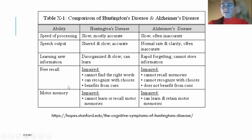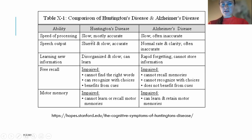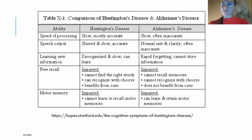It is important to compare Huntington's disease with Alzheimer's disease. There are some distinctive features: speed of processing is generally accurate in Huntington's disease, whereas in Alzheimer's disease it is often inaccurate. Similarly, speech output in Huntington's disease is slow but accurate, while in Alzheimer's disease it is normal rate and clarity but often inaccurate.